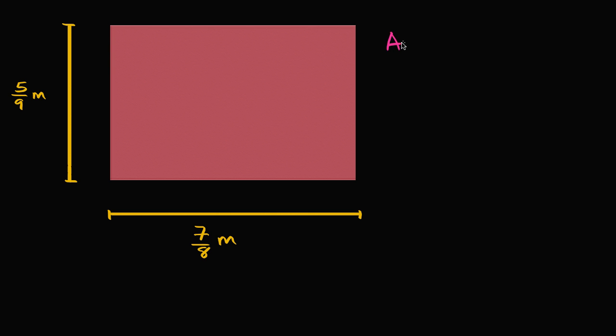Well, one way to think about it, you could say our area is just going to be the width times the height. We're just going to multiply these two dimensions. And so the width is 7 eighths of a meter. So it's going to be 7 eighths of a meter times the height, which is 5 ninths of a meter. And what's that going to get us?